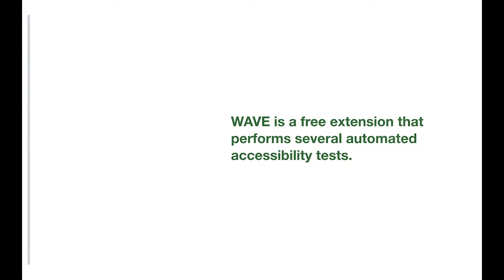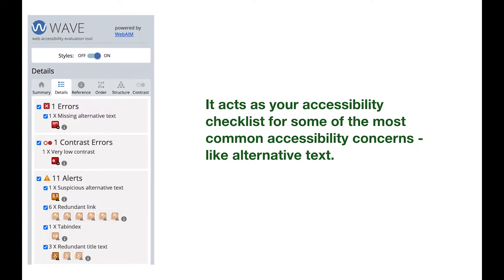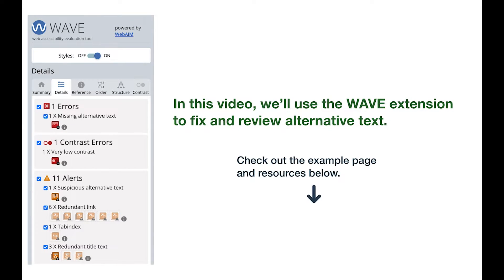WAVE is a free extension that performs several automated accessibility tests. It acts as your accessibility checklist for some of the most common accessibility concerns, like alternative text. In this video, we'll use the WAVE extension to fix and review alternative text. We'll use an example page linked below if you want to follow along. To learn more about accessibility and the WAVE extension, check out the resources below.